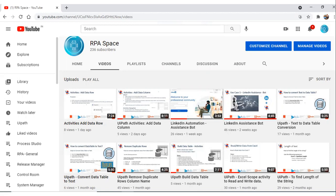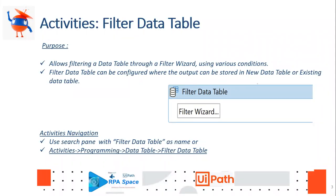Let's jump into today's video about the Filter Data Table activity. As the name suggests, Filter Data Table contains many conditions through which we can limit or filter a data table and customize it as per your project needs. The output can be stored in the existing data table itself or you can create a new data table to store the filtered values. To find the Filter Data Table activity, use the search panel and type 'Filter Data Table', or go to Activities > Programming > Data Table and select the Filter Data option.